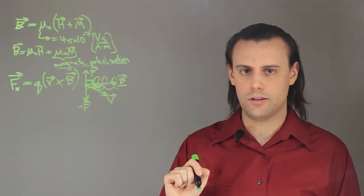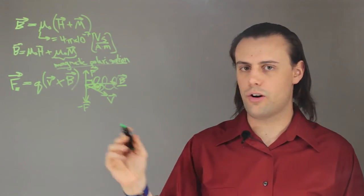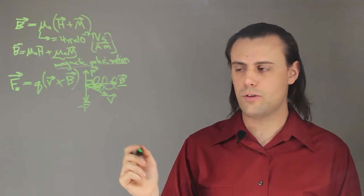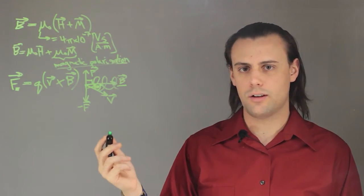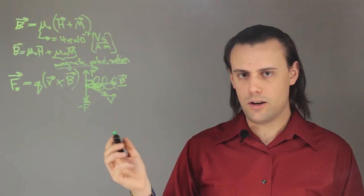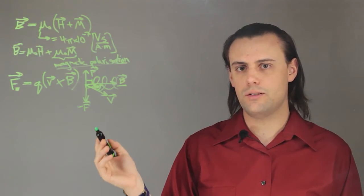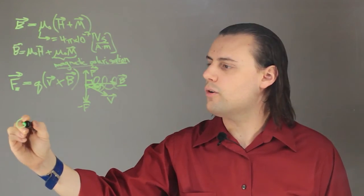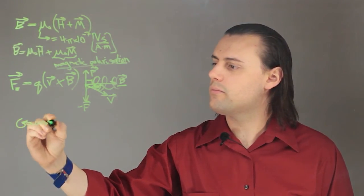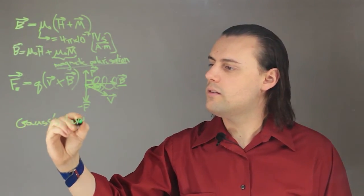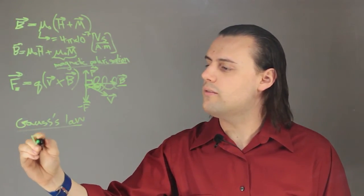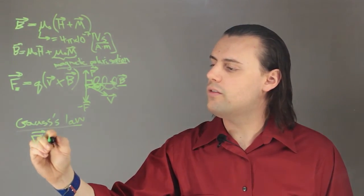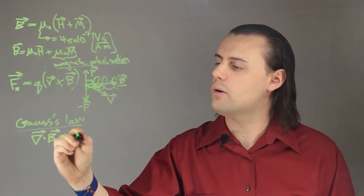Finally, we can consider Maxwell's equations. There are four equations, two which describe the divergence and curl of the electric field, and the other two which describe the divergence and curl of the magnetic field. So Gauss's law for magnetism states that the divergence of the magnetic field is equal to zero.